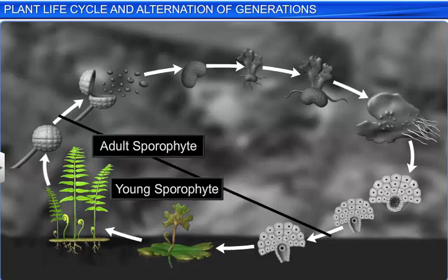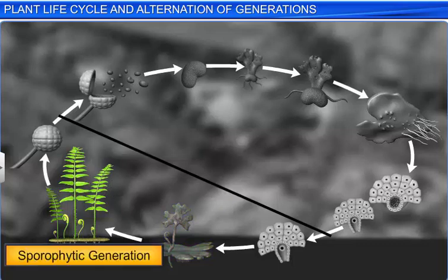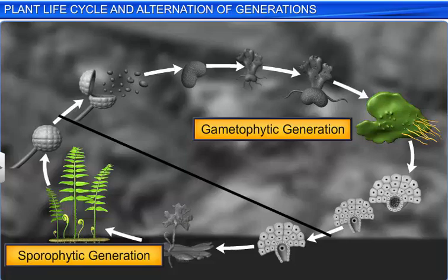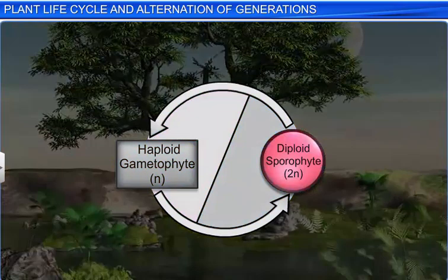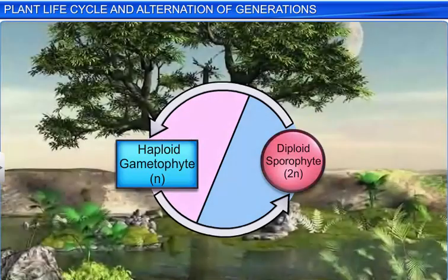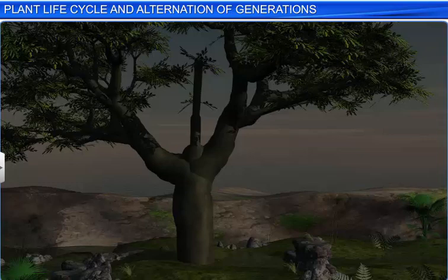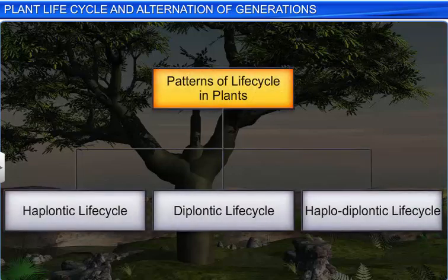The plant body thus alternates between a sporophytic generation and a gametophytic generation. However, in different plant groups, either the sporophytic generation or the gametophytic generation is the dominant phase, or in other words, persists for a longer period. This difference gives rise to three patterns of life cycle in plants: the haplontic life cycle, diplontic life cycle, and haplodiplontic life cycle.